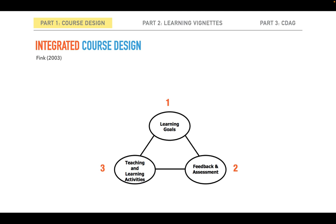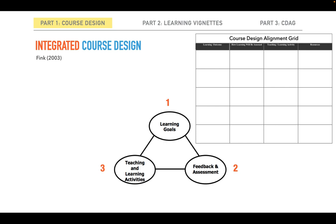However, Fink's model emphasizes the importance of ensuring key components are aligned with one another by asking questions such as: Do assessment procedures address the full range of learning goals? Are there learning goals not being assessed? Are we assessing something that isn't a learning goal? What about learning activities — do they support learning goals? For example, do learning activities consist of all lecture when what we really want is for students to be able to critically evaluate? So Fink arranges the elements in a triangle to emphasize the importance of ensuring all three elements are aligned with one another. Fink has a worksheet to help instructors identify components for courses and assess their alignment — it's called a course design alignment grid.